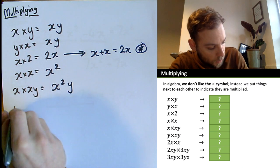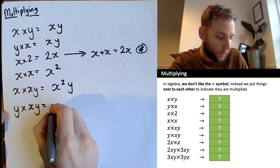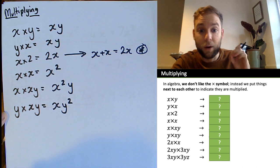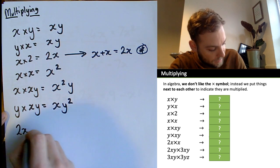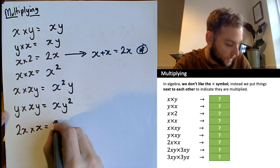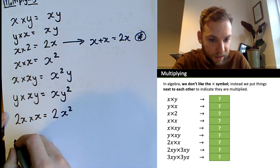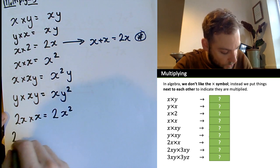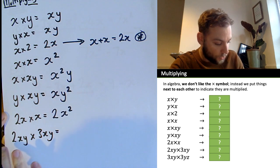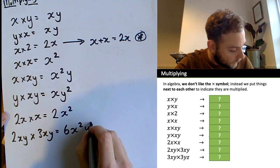y times xy: dealing in alphabetical order, we have the x — just one — and y times y equals y squared, so the answer is xy squared. Next: 2x times x — 2 times x, then times x gives x squared — so 2x times x equals 2x squared. Now something harder: 2xy times 3xy. Deal with the numbers first: 2 times 3 equals 6. x times x is x squared, y times y is y squared. Answer: 6x squared y squared.